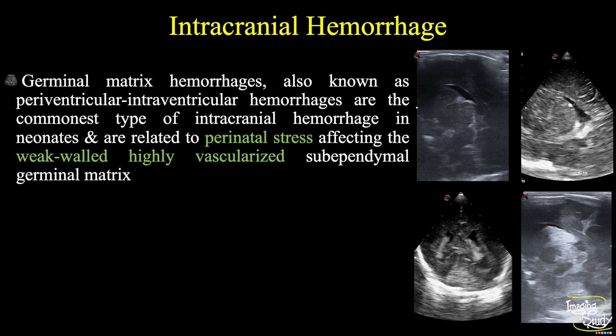Let's start with intracranial hemorrhage. Germinal matrix hemorrhages, also known as periventricular-intraventricular hemorrhages, are the commonest type of intracranial hemorrhage in neonates and are related to perinatal stress affecting the weak-walled, highly vascularized subependymal germinal matrix. This germinal matrix contains neurons and glial cells which migrate into their position later, making it a dense tissue and dense vascular area with weak connective tissue walls — a very common site for hemorrhage. Especially if the neonate is premature at around 28 to 32 weeks, there is a 67% chance of hemorrhage here. Around 90% of these hemorrhages can be detected within 4 days, whereas 40% can be detected within the first 5 hours.